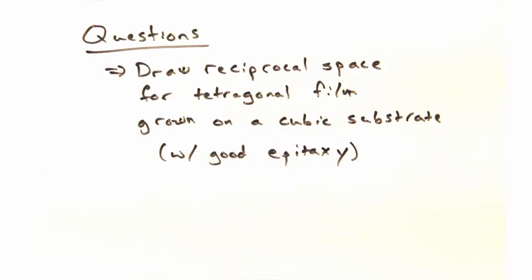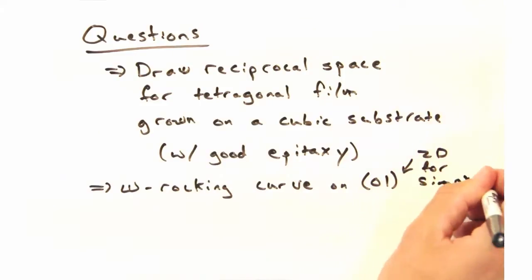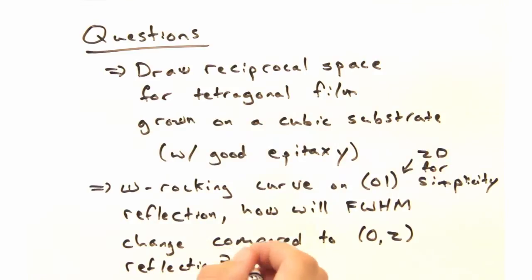And here's the second question. If we do an omega rocking curve on the 0-1 reflection, how do you think the full width half maxima will change if we go out and measure it on the 0-2 reflection?